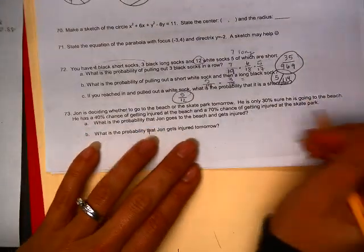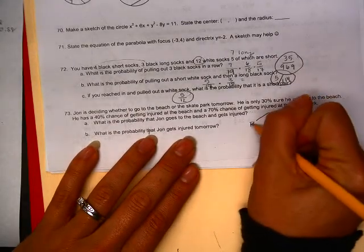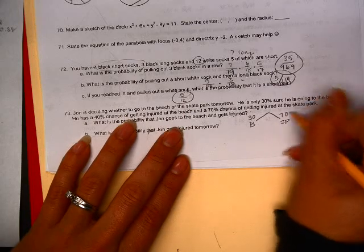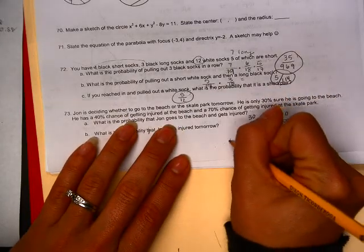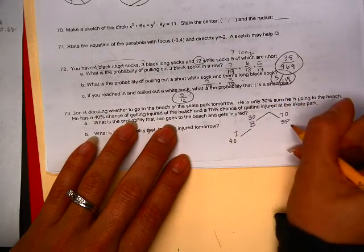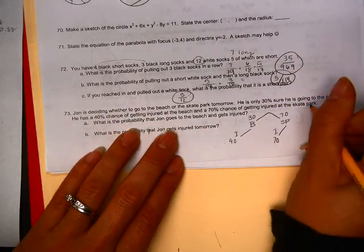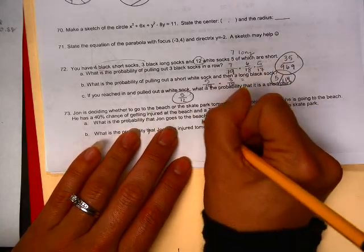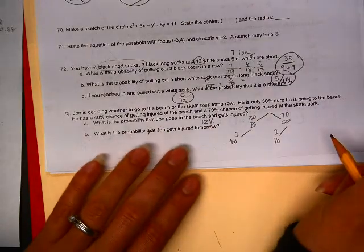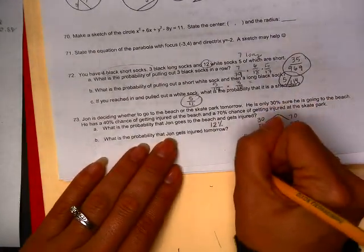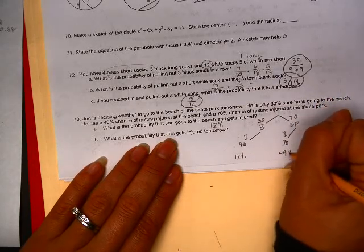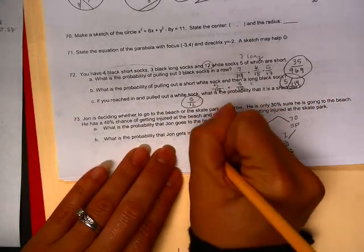And our last one, we're deciding whether to go to beach. So beach, we're 30% sure, and so that means the skate park must be 70. 48% of injury at the beach, 70% of injury at the skate park. What's the probability that he goes to the beach and gets injured? You multiply those together. So that would be a measly 12%. But what is the probability that he gets injured at all tomorrow? Here's my 12%. Here's my 49%. And when I add them together, I get my 61%. All right. Thanks for playing.